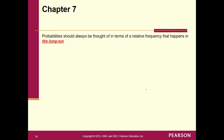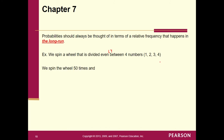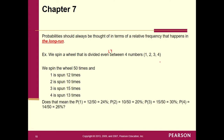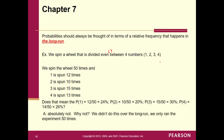Probabilities should always be thought of in terms of a relative frequency that happens in the long run, not the short term. For example, if we spin a wheel divided evenly between four numbers — 1, 2, 3, and 4 — each should have a 25% probability. However, if we only did this 50 times and one came up 12 times, two 10 times, three 15 times, four 13 times, that does NOT mean the probabilities are 24%, 20%, 30%, 26%. We didn't do this over the long run.